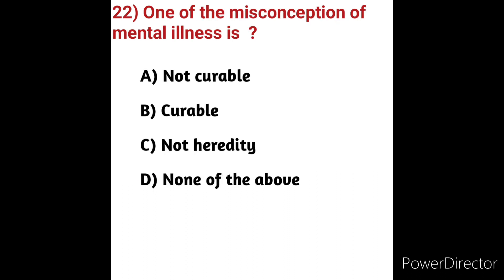Question 22: One of the misconceptions of mental illness is — options: (A) not curable, (B) curable, (C) not hereditary, (D) none of the above. The most common misconception is that mental illness is not curable. In reality, people with mental illness can and do recover and resume normal activities. The correct answer is option A: not curable.